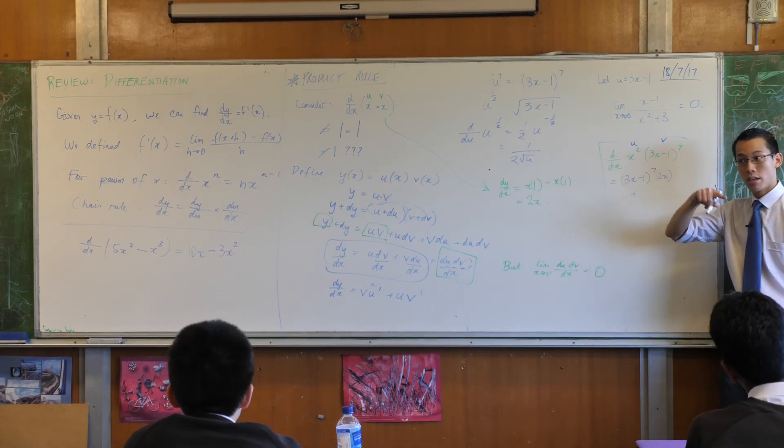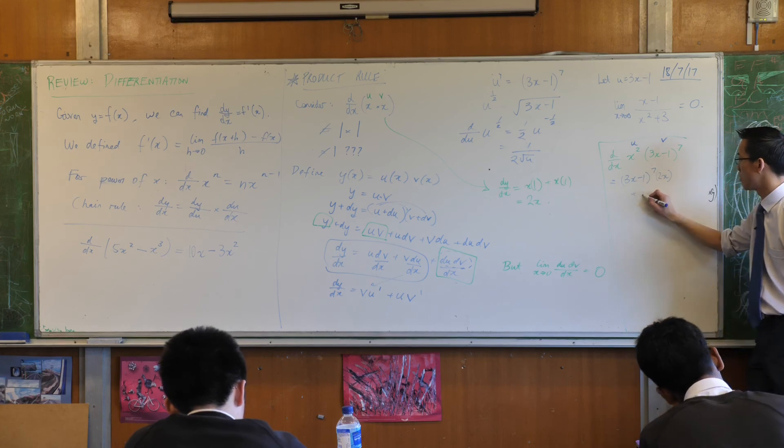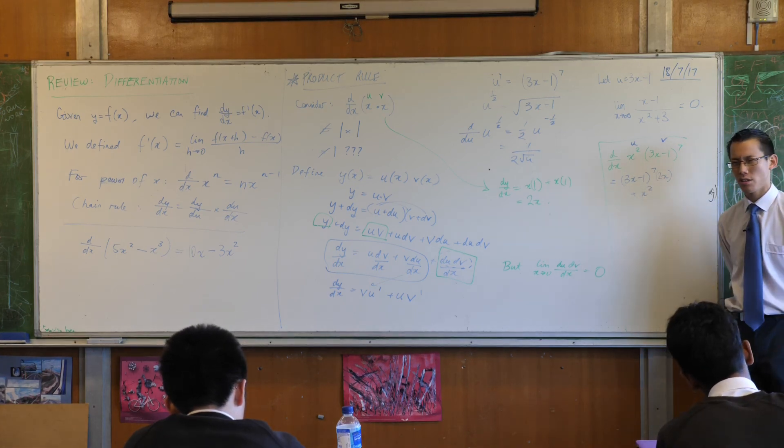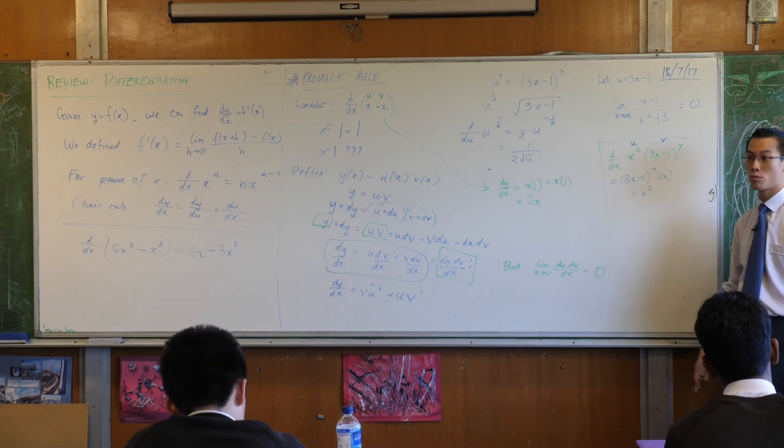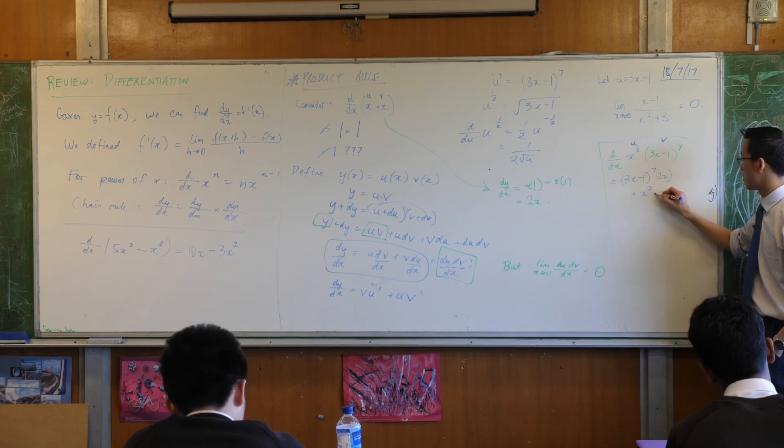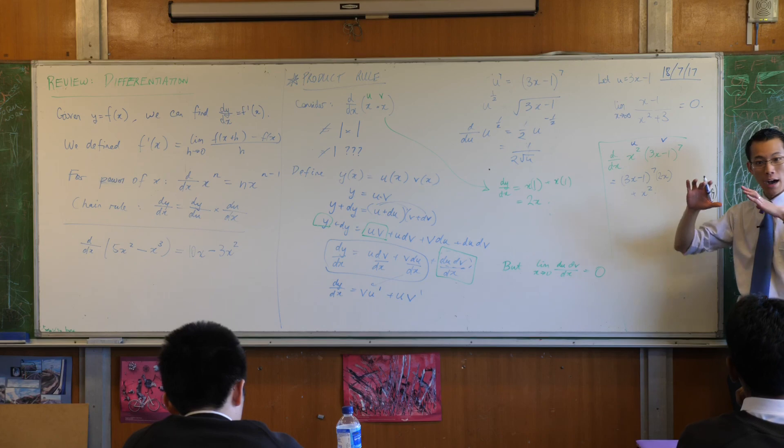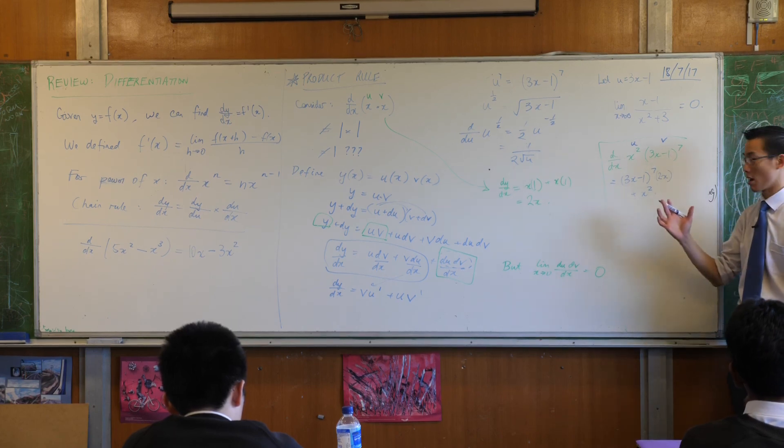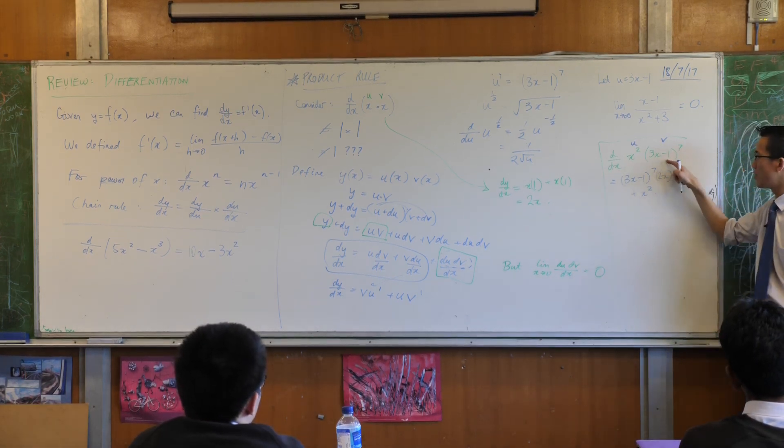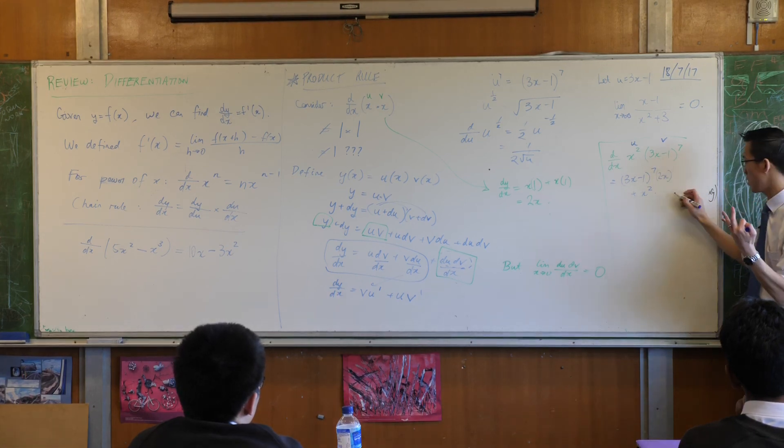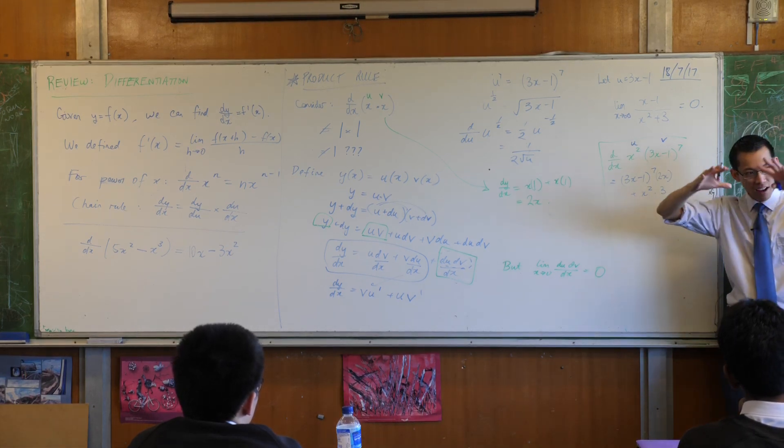It's u times v dash. There's u. And what's v dash in this case? This is actually easy enough that you could probably do it in your head. You've got to do the inside and then you've got to do the outside. It actually doesn't matter which order you do it in. What's the inside derivative? It's just 3.